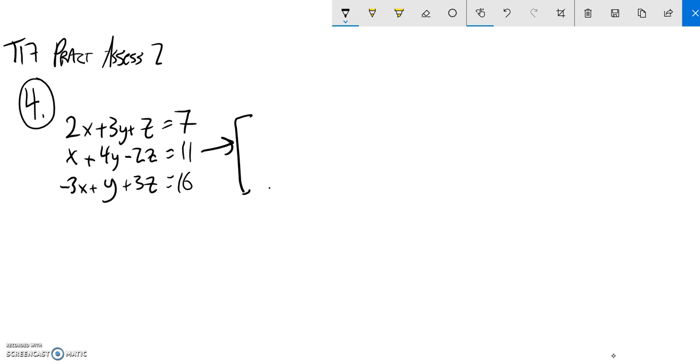So, 2, 3, 1, 7, 1, 4, negative 2, 11, and then that last equation is negative 3, 1, 3, 6—at least the coefficients for that.